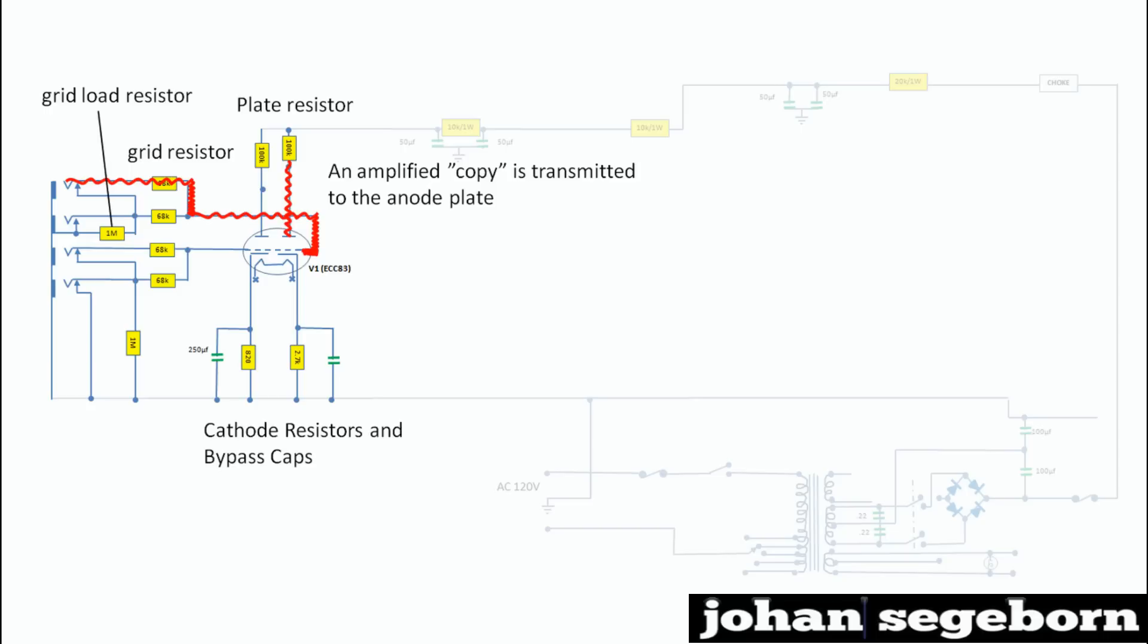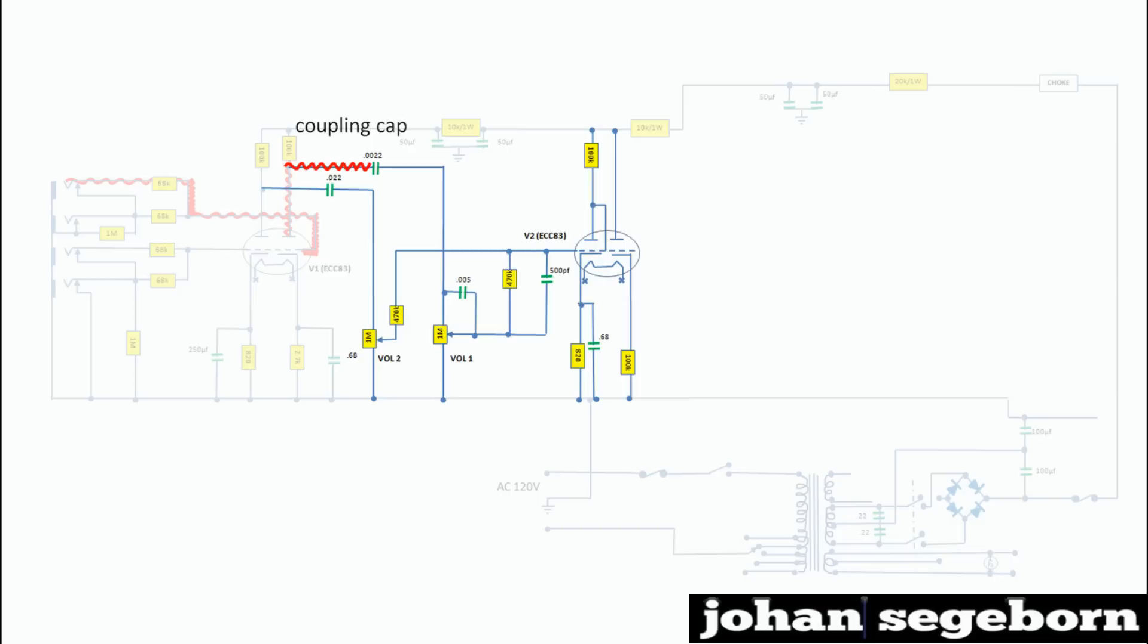The signal is fed onto the next pre-amp. But it first passes through a coupling capacitor. The purpose of which is to block DC and let AC pass. If DC were to pass here, it would interfere with the biasing of the following pre-amp tube. It would interfere with the relationships between different voltages of the tube necessary to keep the tube operating in its optimum, the linear region.